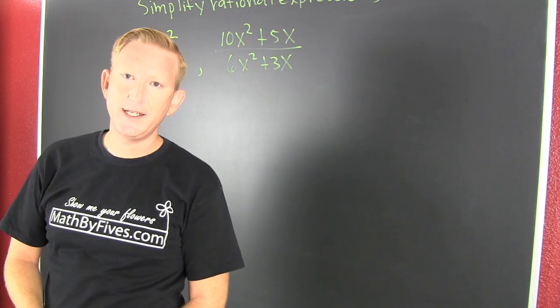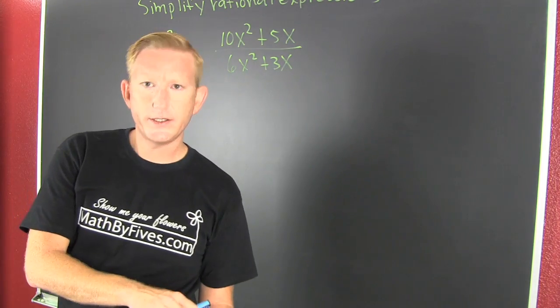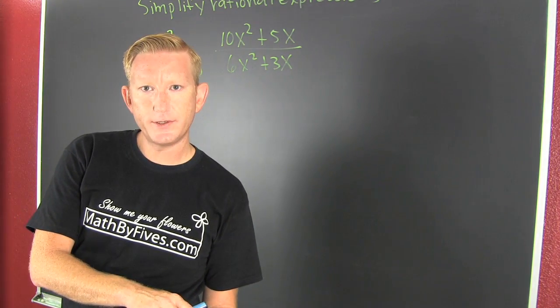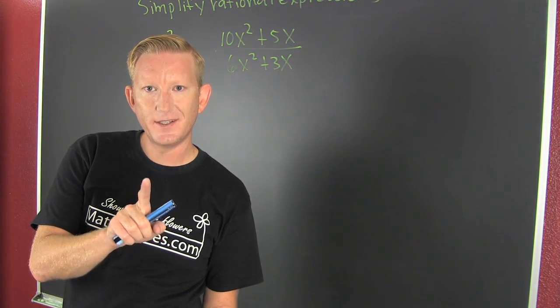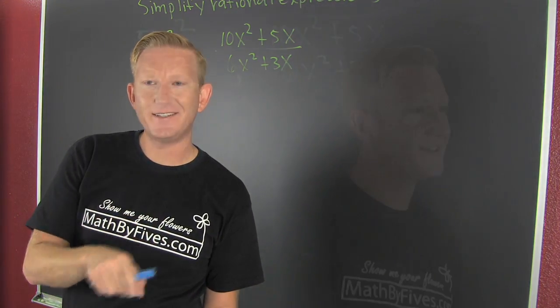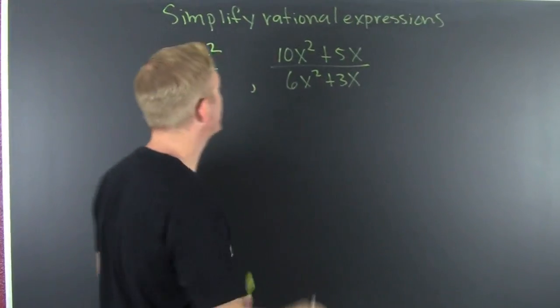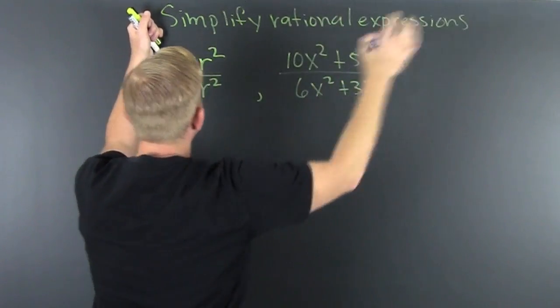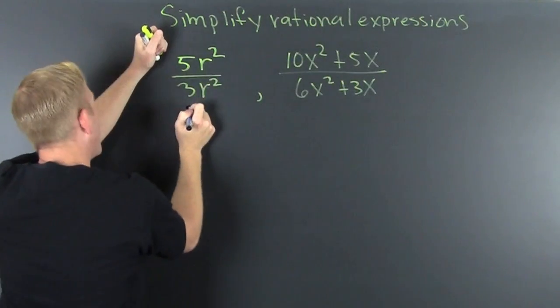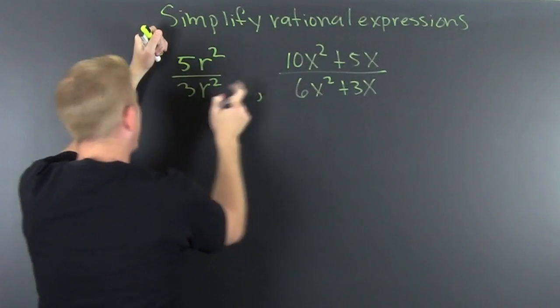Y'all told me I need an introductory example to simplifying rational expressions — here it is. Alright, what am I trying to do? I'm trying to simplify rational expressions with this guy: 5r squared over 3r.